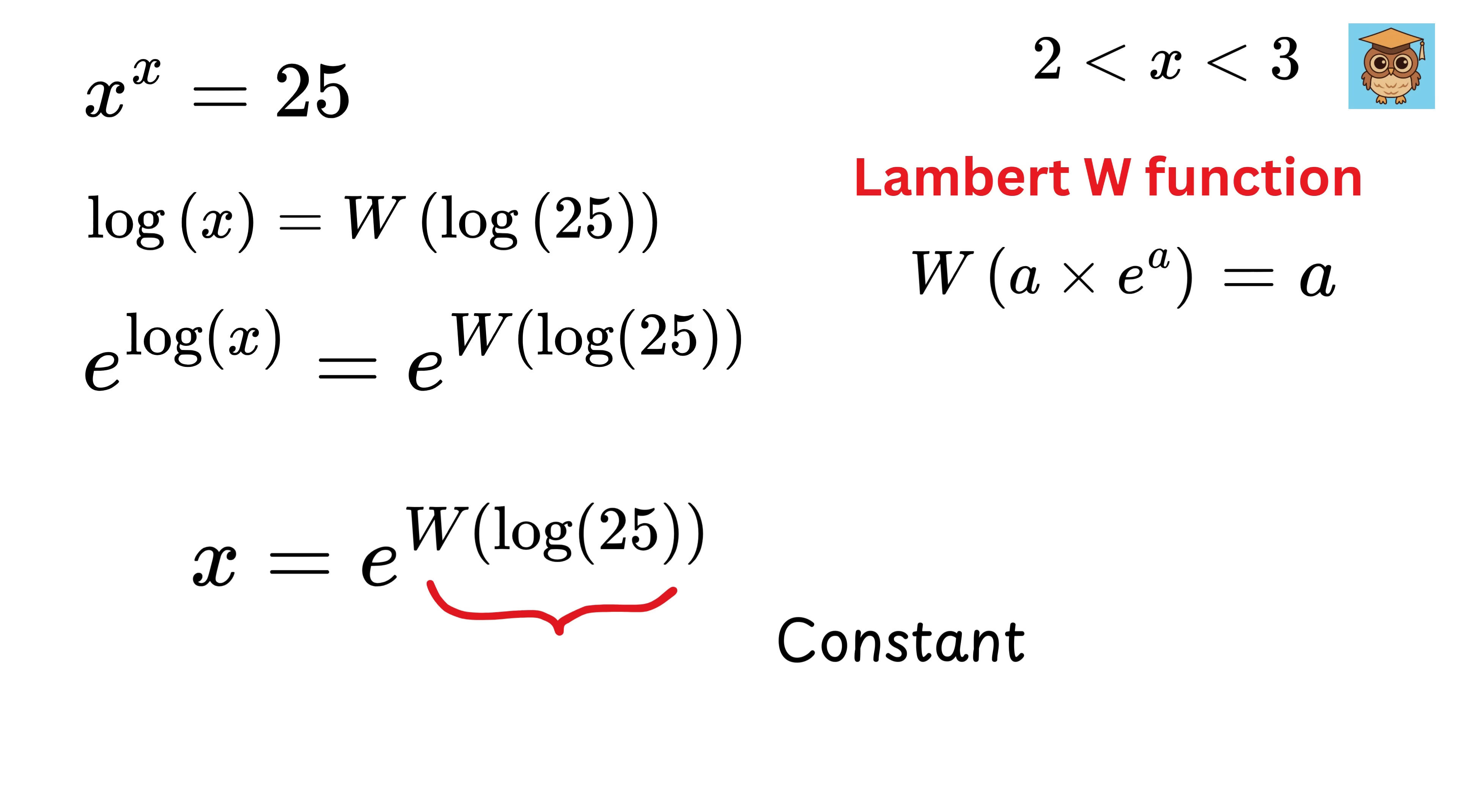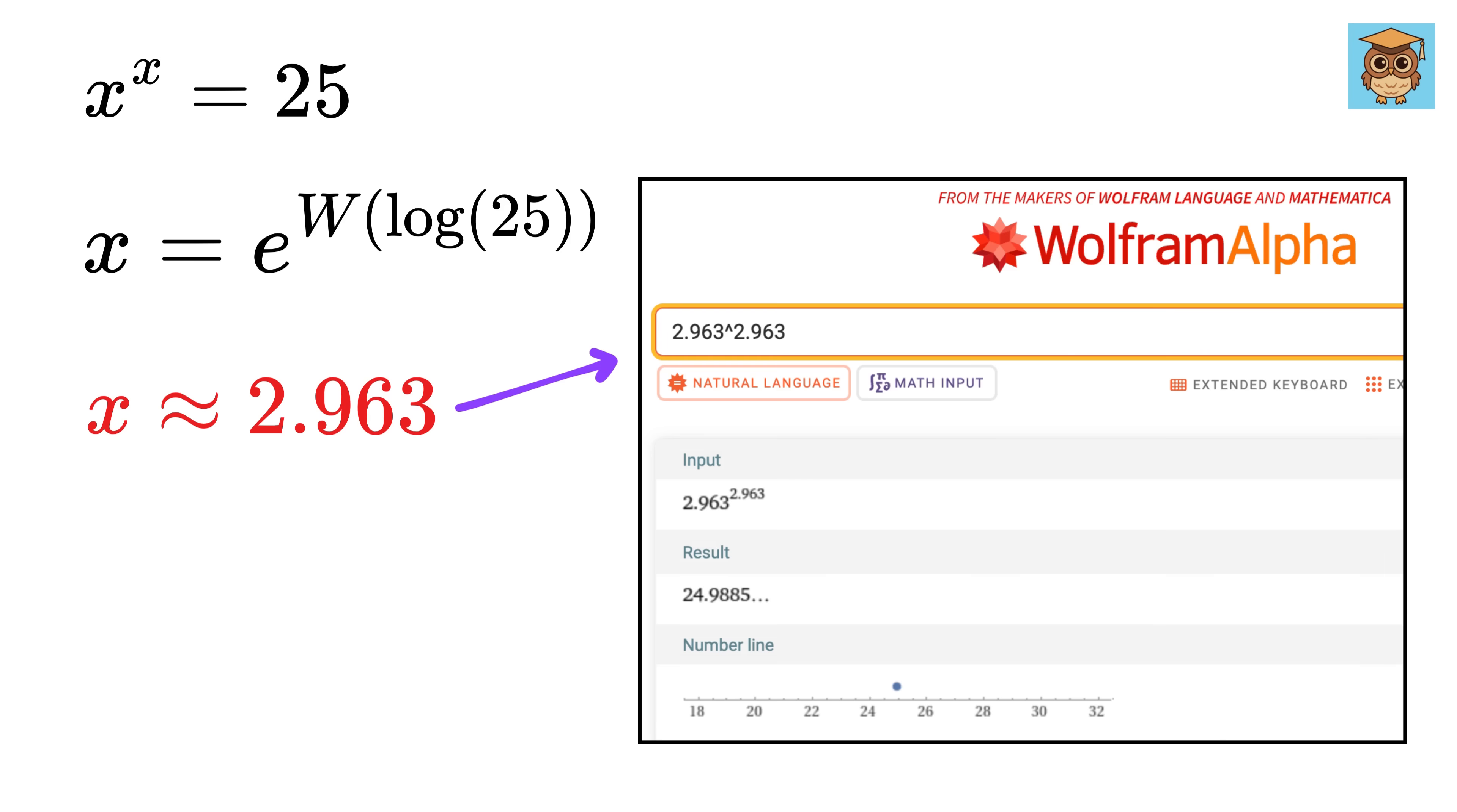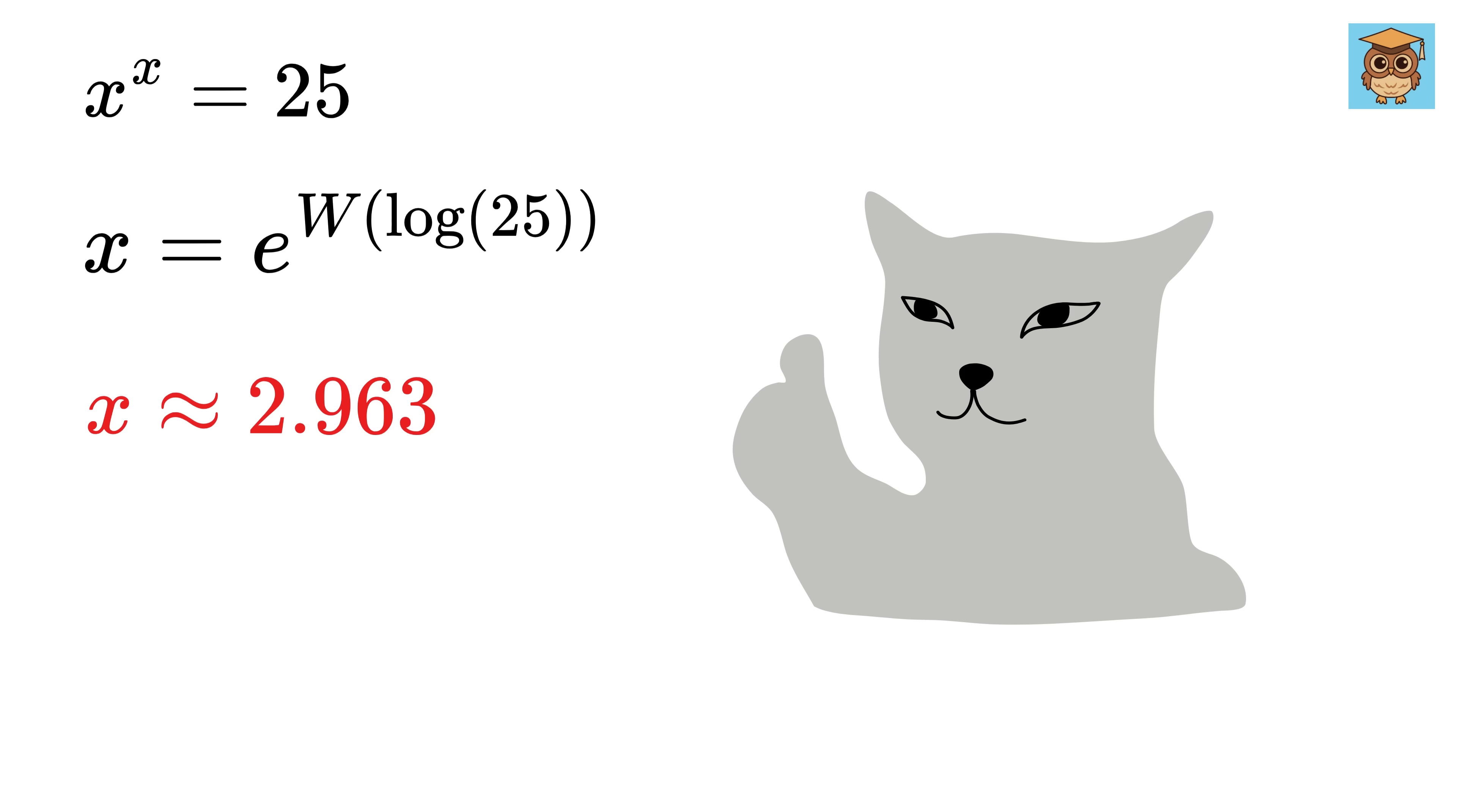Again, don't be scared of this term, as this was constant. So e raised to this term is also simply a constant. You can leave the answer like this, or if you want the value, we get this value as approximately 2.963. And as we discussed earlier, our answer lies between 2 and 3, and also this is the only real solution to this question. Take a calculator and plug this value in it to get the result as nearly 25. So good!